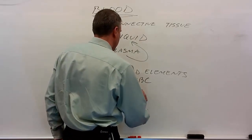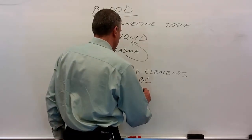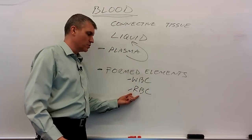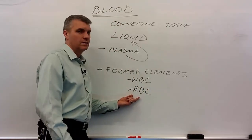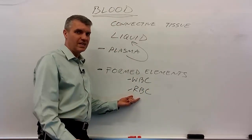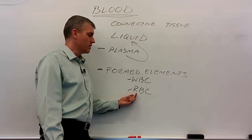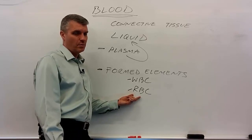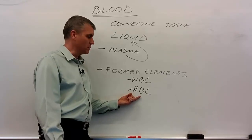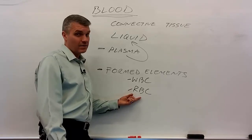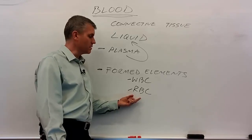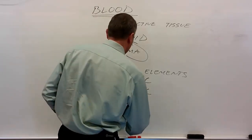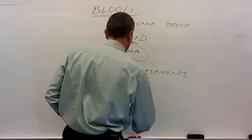The red blood cell is also called a cell, but it's not a true living cell because it lacks a nucleus and therefore is not capable of reproduction. It's also not capable of replacing its own parts. The last formed element, of course, is platelets.